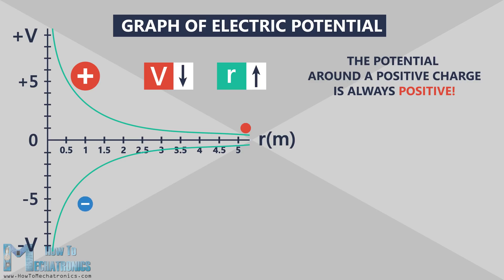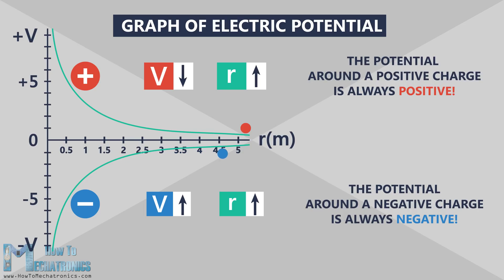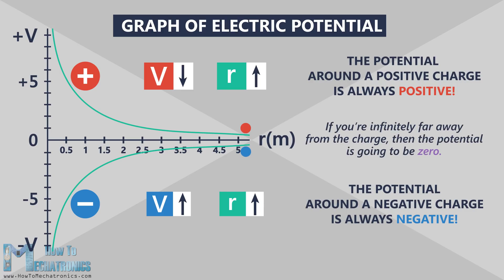On the other side we have a negative charge, and the potential around the negative charge is always negative. As you move away from the charge, as the distance from the charge increases, the potential becomes less negative and actually increases, also getting closer and closer to zero. Here we can notice that if you are infinitely far away from the charge, then the potential is going to be zero for both positive and negative charges.